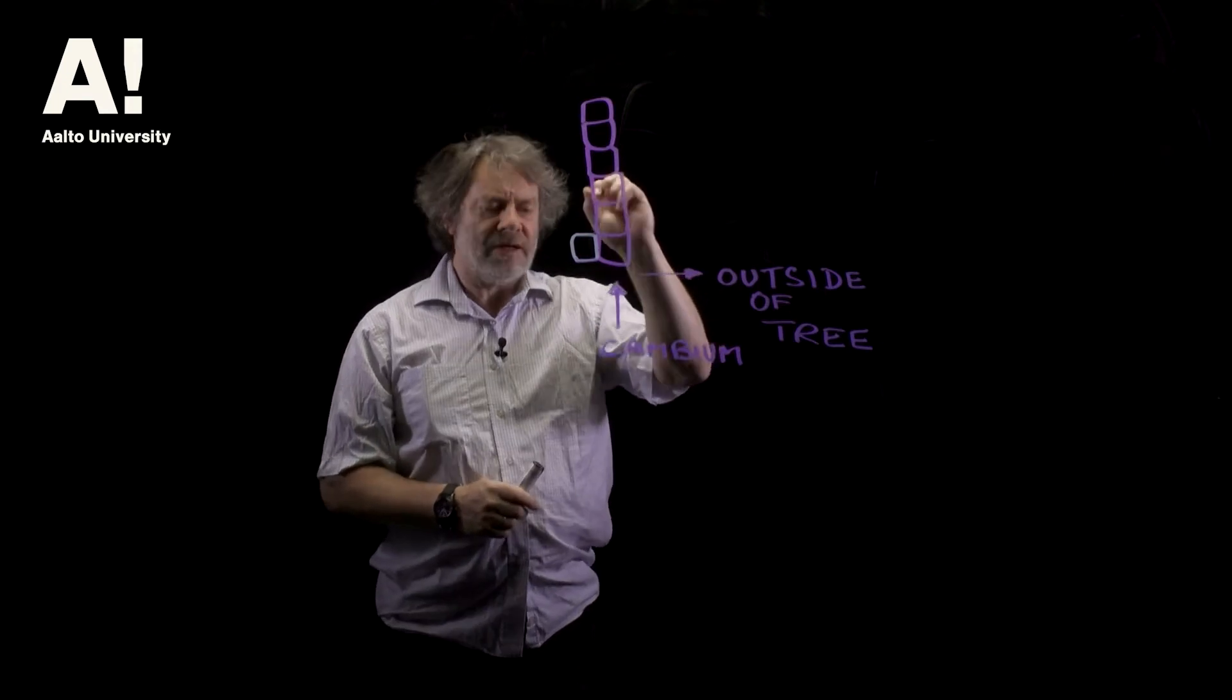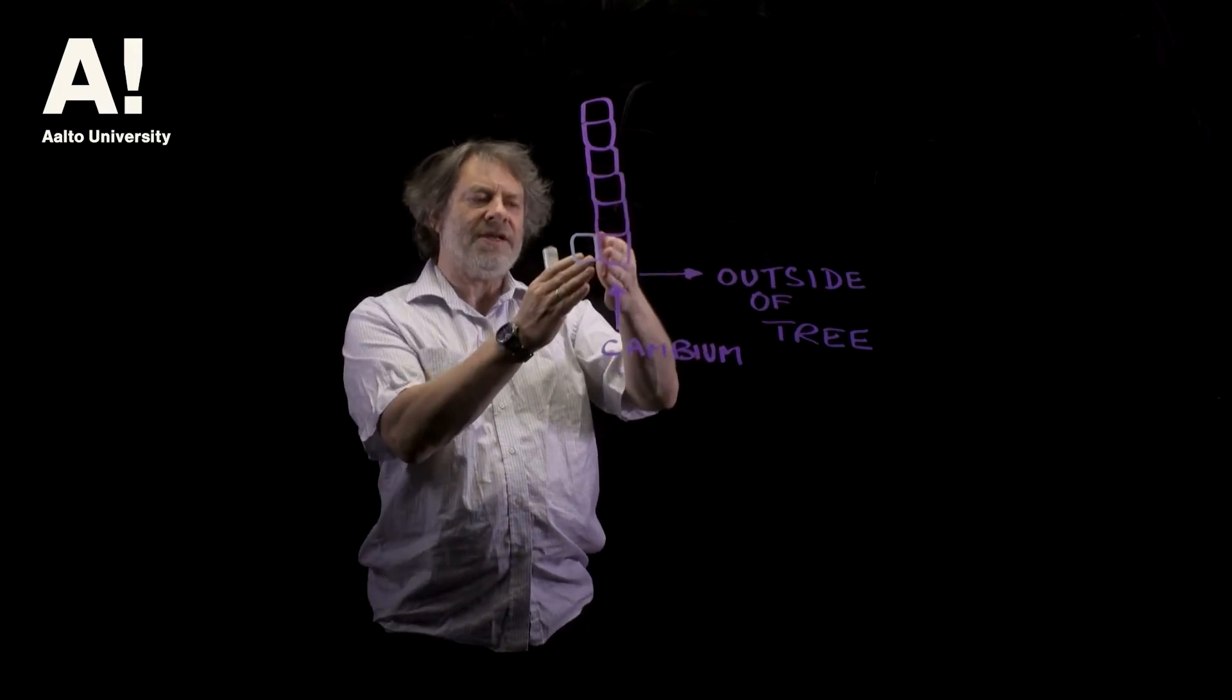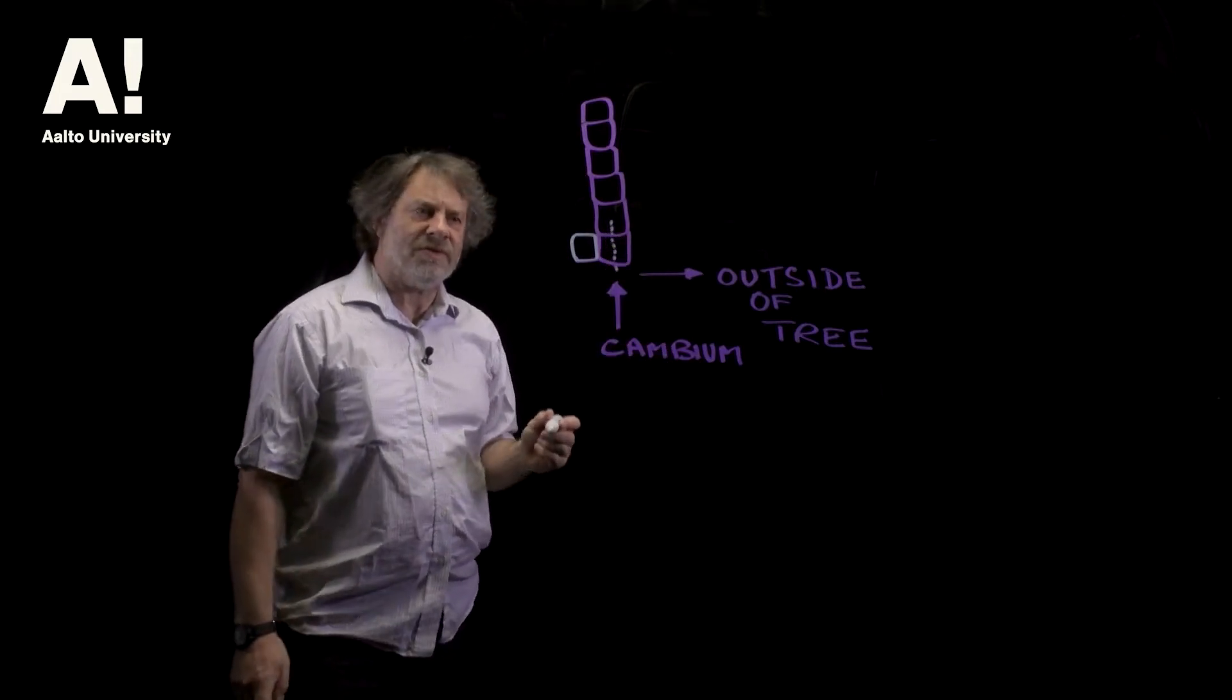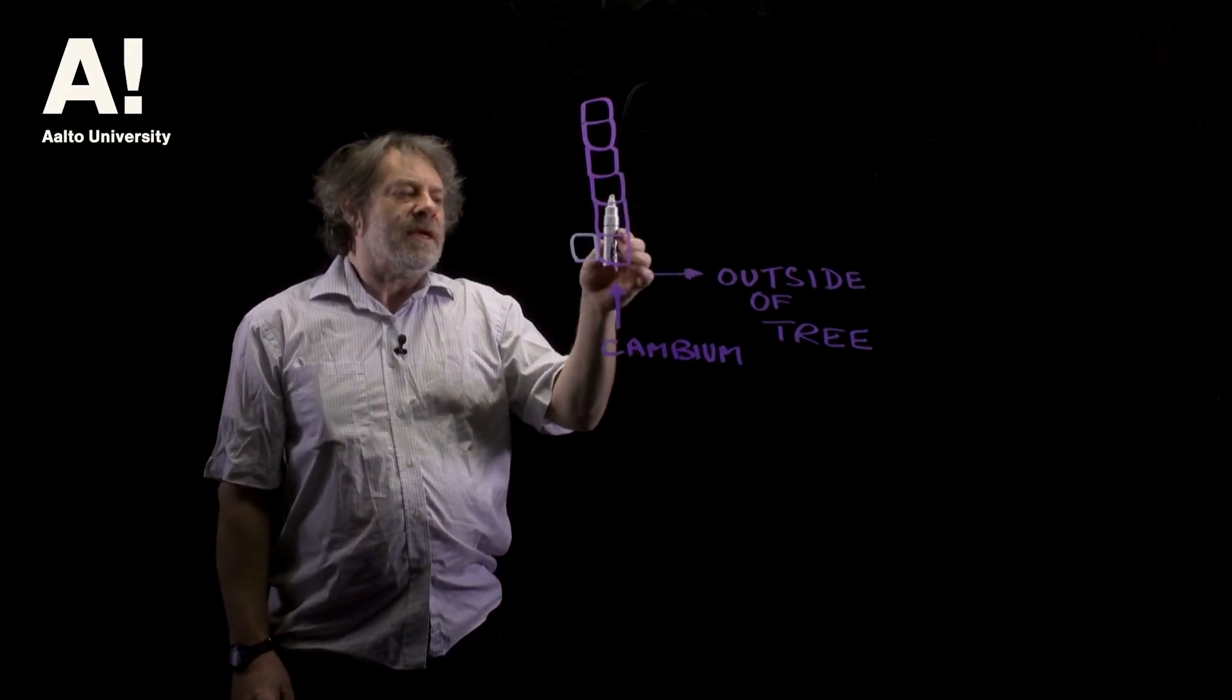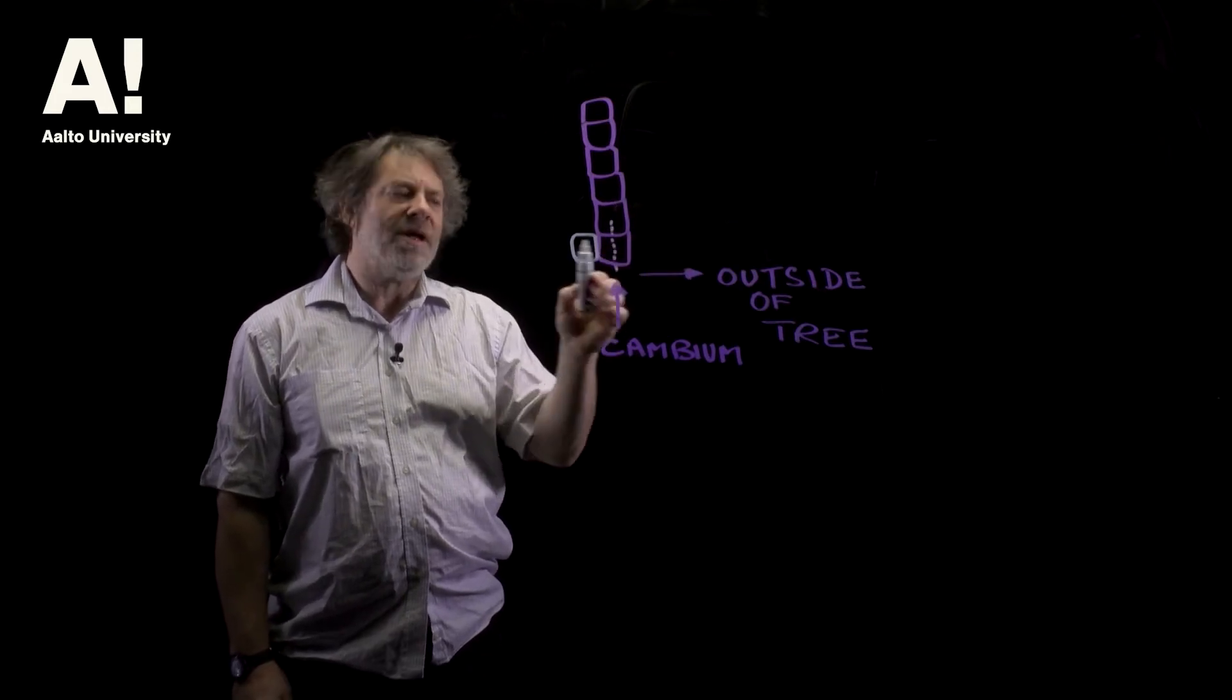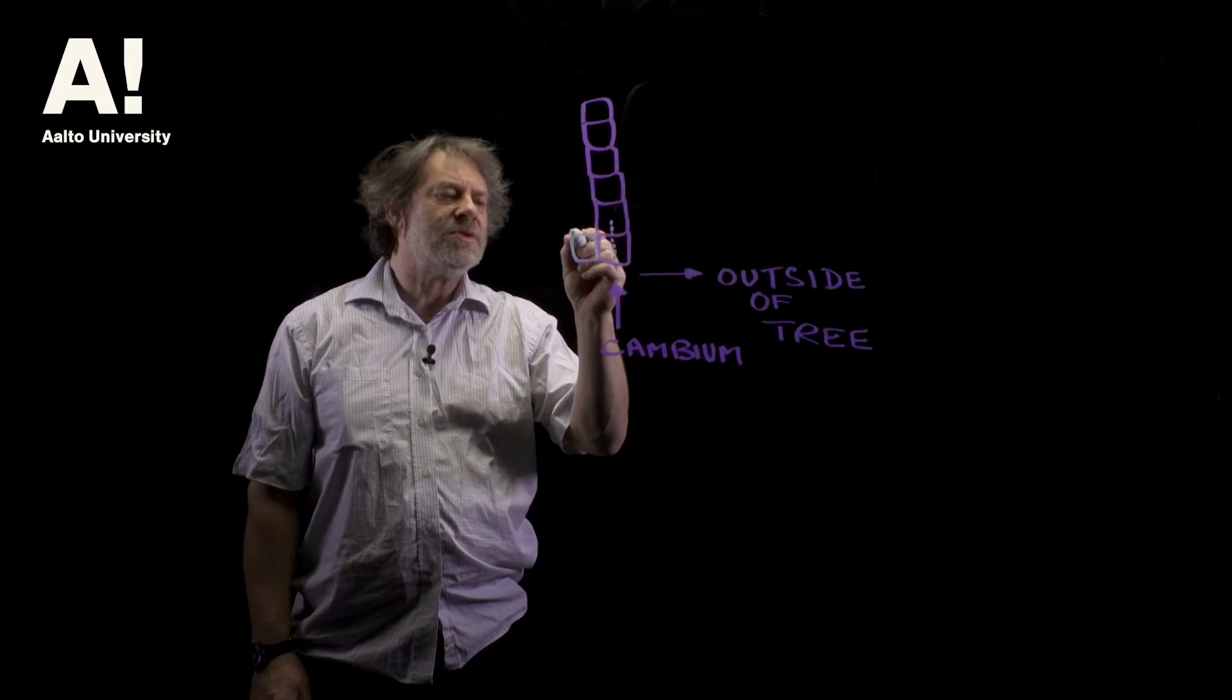In order to do that the cells in the cambium layer divide in this direction and that forms what's called a periclinal division. The cambium moves outwards that way, leaves that cell behind and that cell differentiates into a xylem cell.